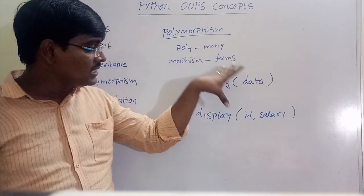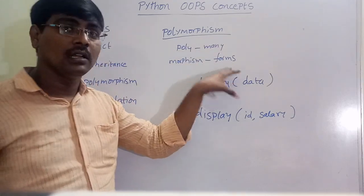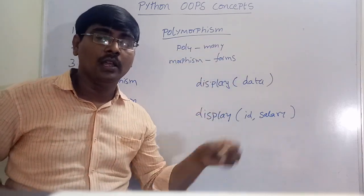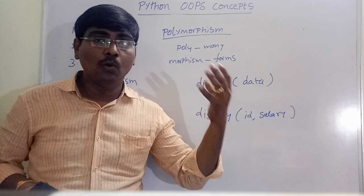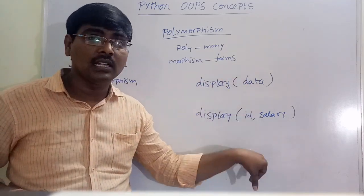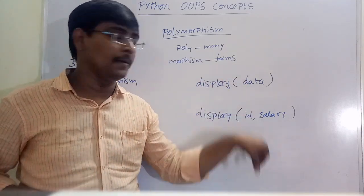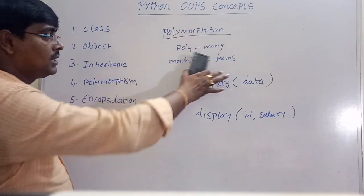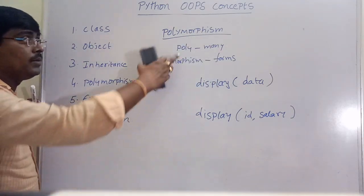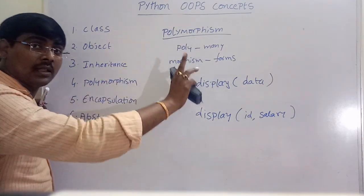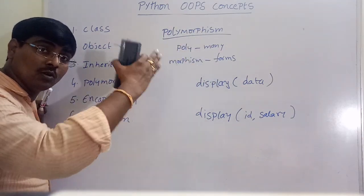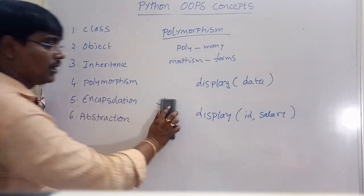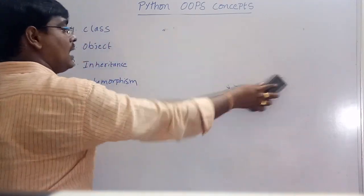In polymorphism we will discuss overloading and overriding. If we are using a single class, we implement method overloading. If we are using more than one class — where the inheritance concept is applied — then overriding comes into play. That is polymorphism: one method behaves in different ways in different contexts.